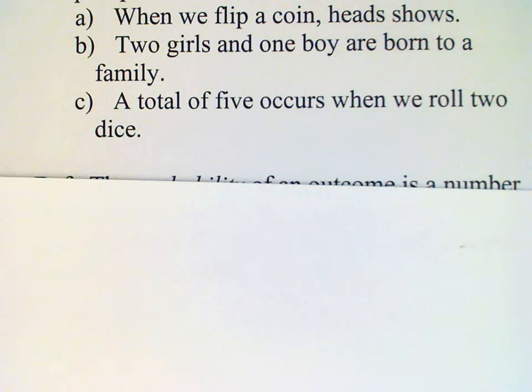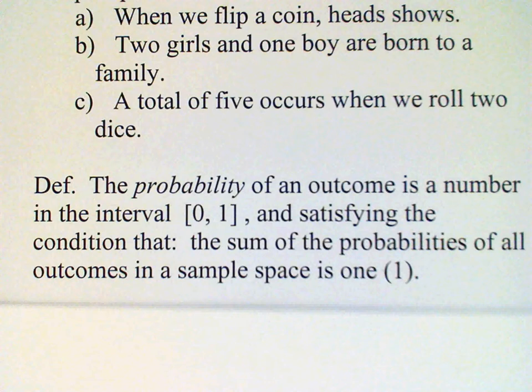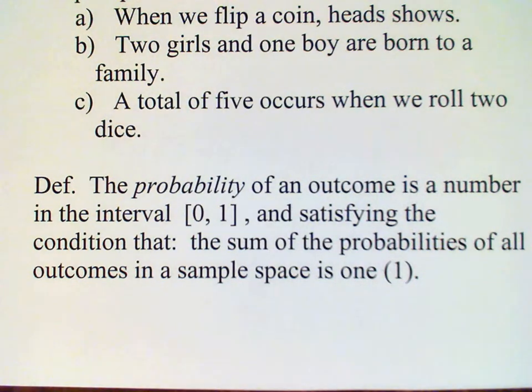Now we're ready to define what is meant by probability. The probability of an outcome is a number in the interval zero to one, satisfying the condition that the sum of the probabilities of all outcomes in the sample space is one.